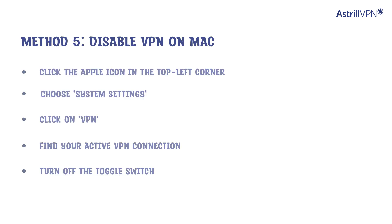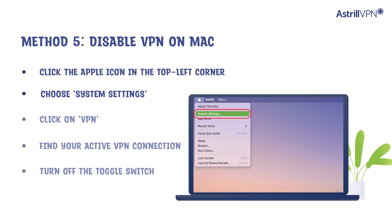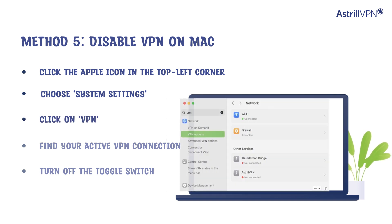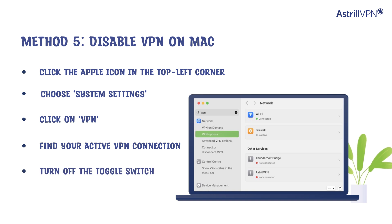Method 5: disable VPN on Mac. Click the Apple icon in the top left corner and choose System Settings. Click on VPN, find your active VPN connection, and turn off the toggle switch.